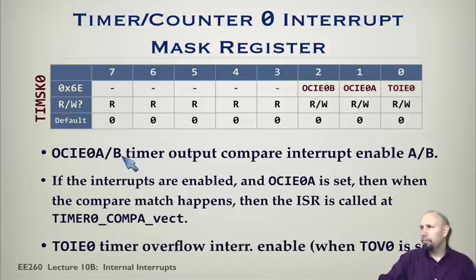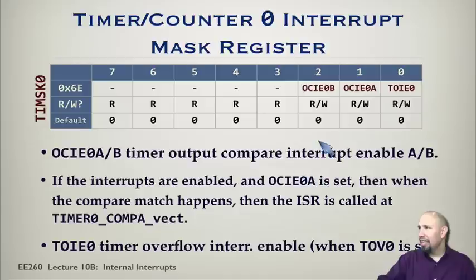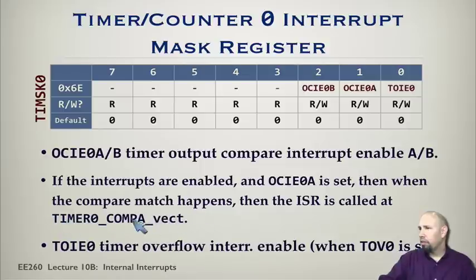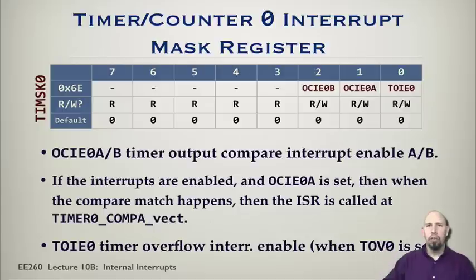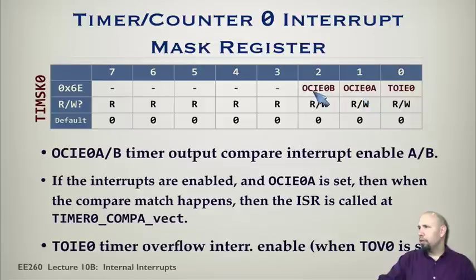If global interrupts are enabled — that is, if the I bit in the status register is set — and the output compare interrupt enable bit is set, then when the compare match happens, the interrupt service routine is called at the corresponding vector. If you have the vector set up with an ISR it will execute; if nothing is defined there, it'll do nothing. So enabling the interrupt can cause interruption of the main process even if no ISR is defined.